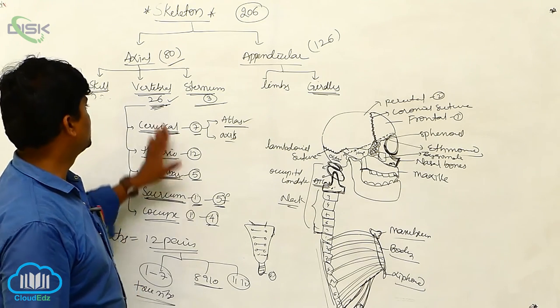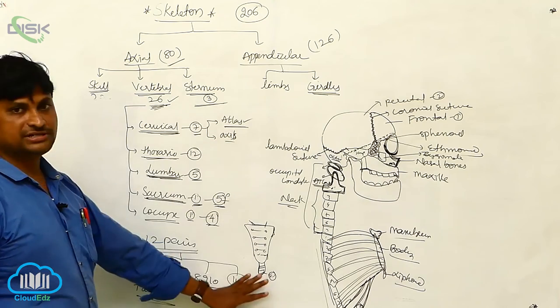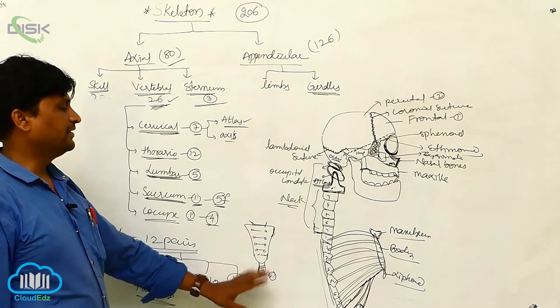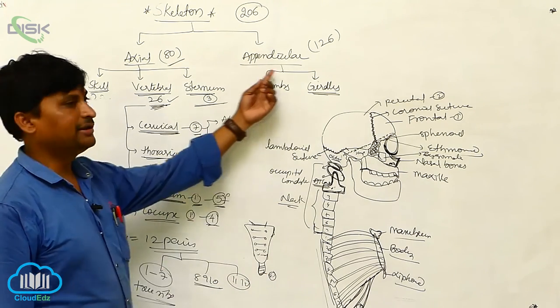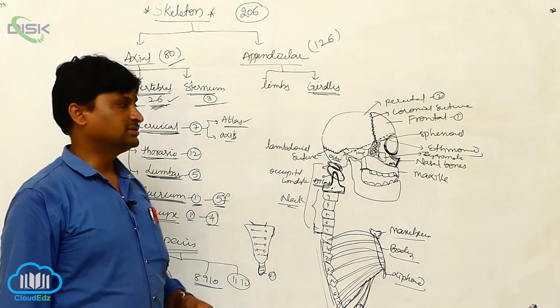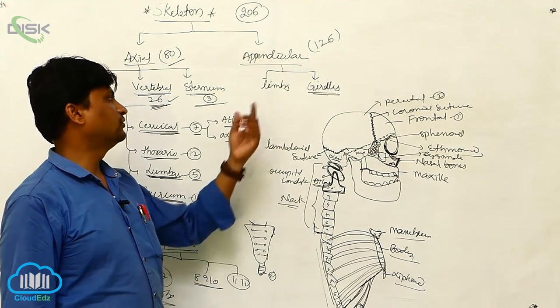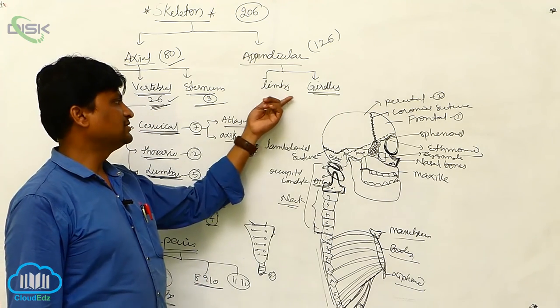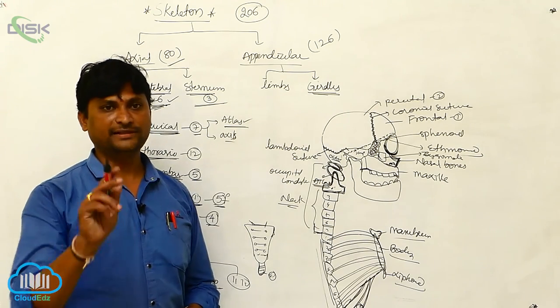This completes the discussion on the vertebral column and sternum. Now let us switch to the appendicular skeletal system, where we will look at limbs and girdles.